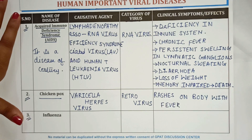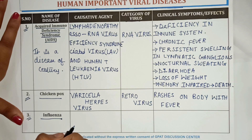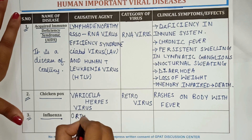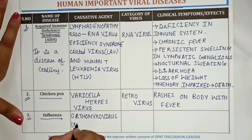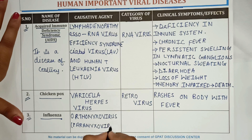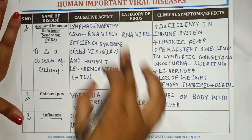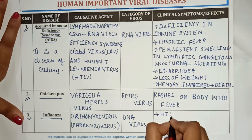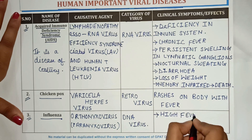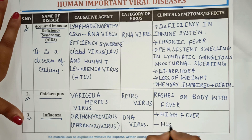The third viral disease is influenza. The causative agent related to this disease is orthomyxovirus, also known as paramyxovirus. The category of virus is DNA virus. The symptoms related to this disease are high fever, muscle pain, and chest pain.